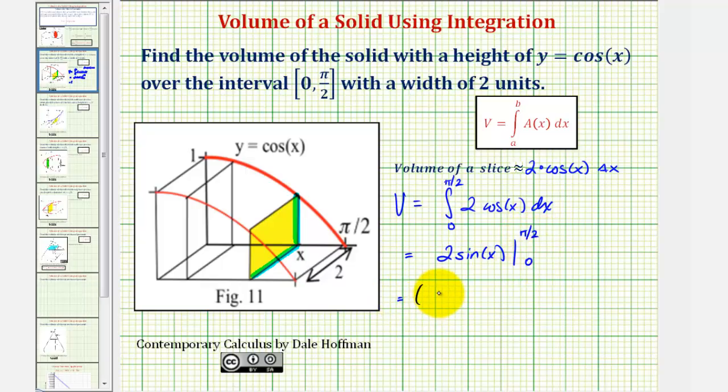So we'd have two sine pi over two minus two sine zero. Notice how this would be two times sine pi over two is equal to one, minus two times sine zero is zero, giving us a value of two.